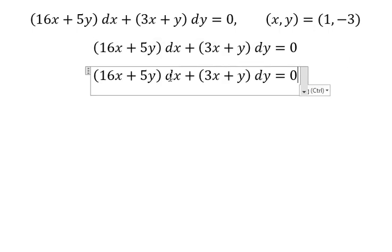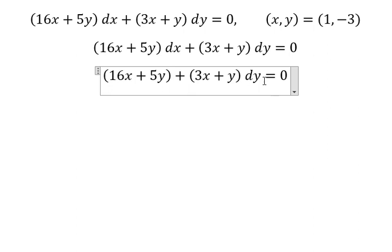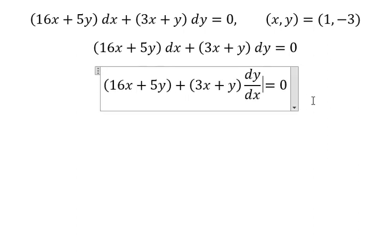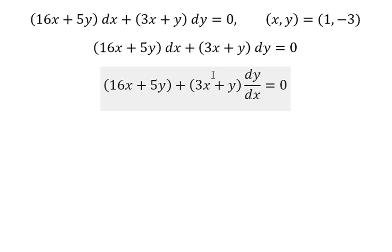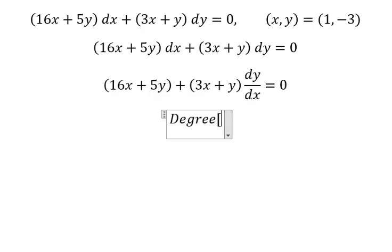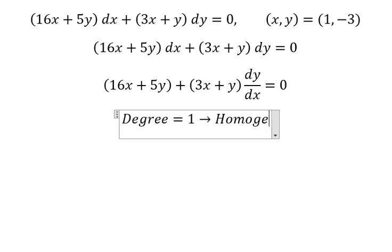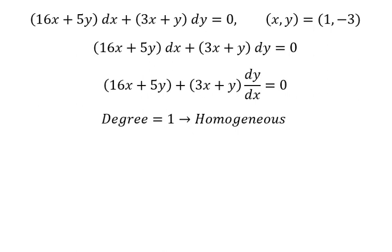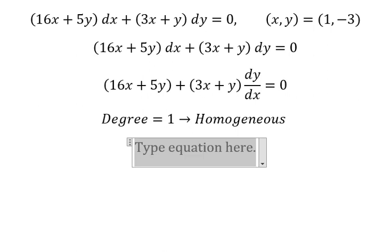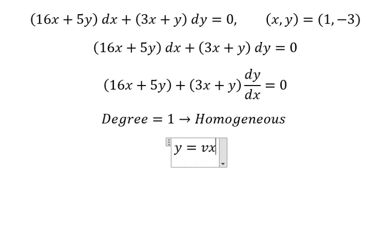We need to divide both sides by dx. Next we have x, y — this is about the real number one. We can use the homogeneous method, so I will put y equals to vx.